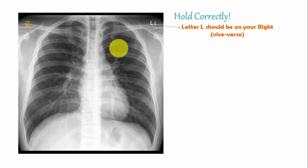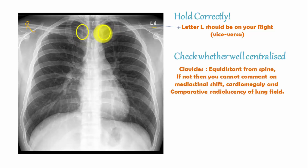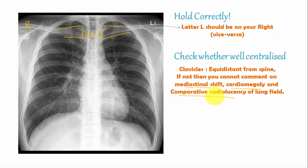That means hold the chest X-ray in such a way that the patient is standing in front of you. Next, check whether the chest X-ray is well centralized. To know whether it is well centralized, look at the medial ends of the clavicles — they should be equidistant from the spinous process of the thoracic vertebra. If not, you cannot comment on mediastinal shift, cardiomegaly, or comparative radiolucency of the lung fields.